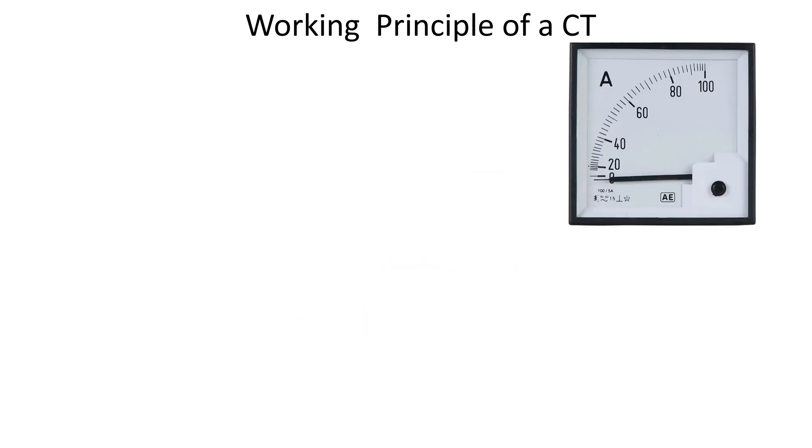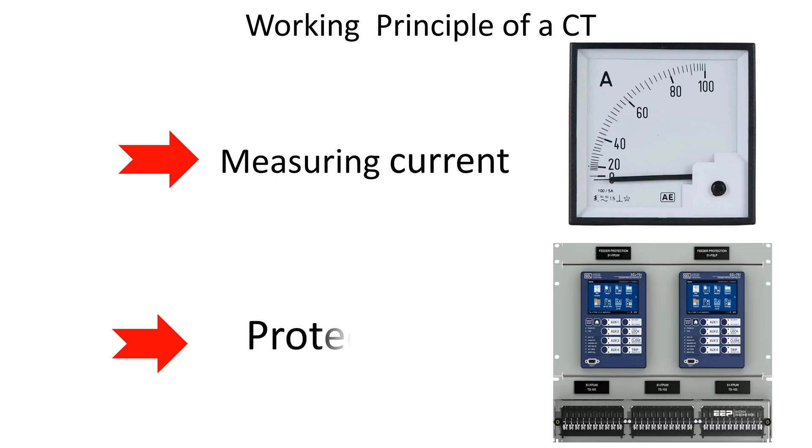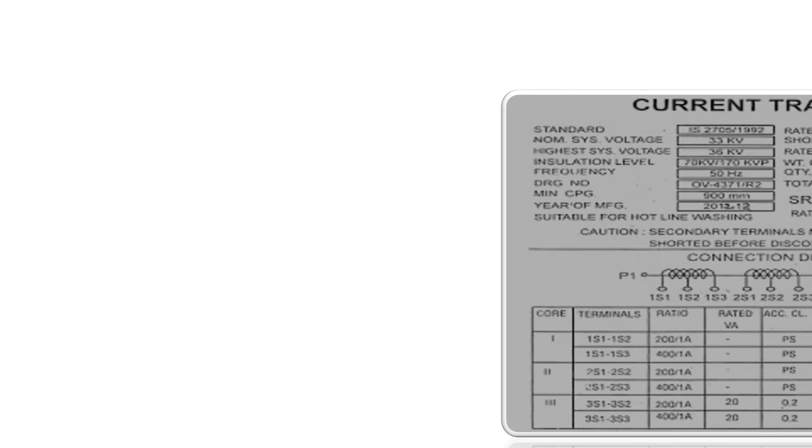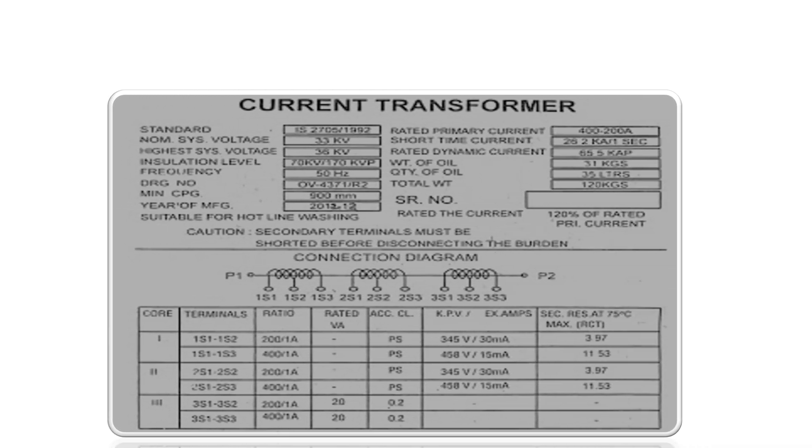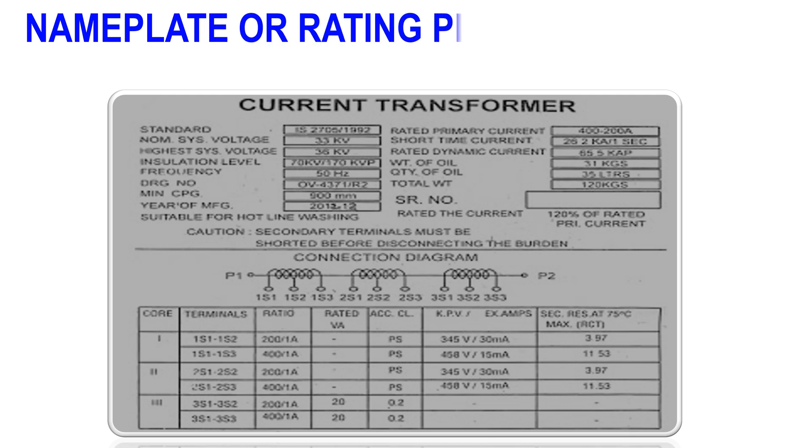A current transformer is used in power system to measure current flowing through any circuit and to protect the system from faults. It has different cores used for different purposes. But here we will start our discussion from top of this nameplate one by one in details. In this episode, we are going to discuss the nameplate parameters of a current transformer.